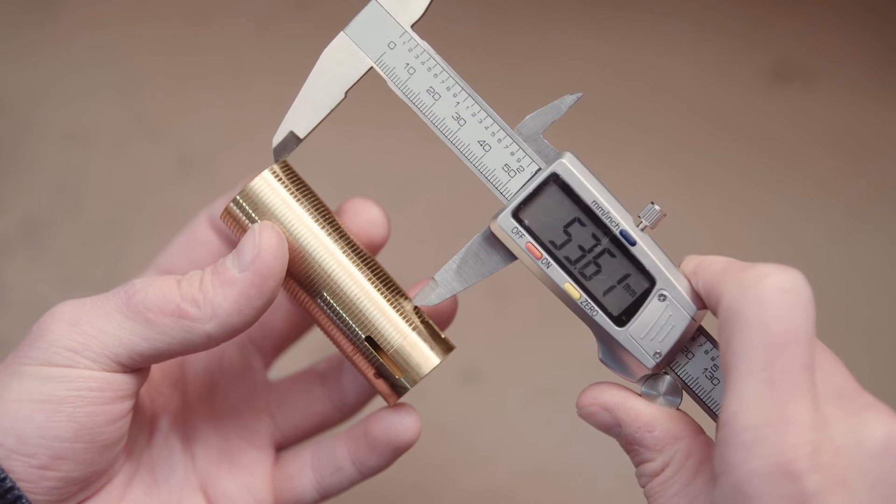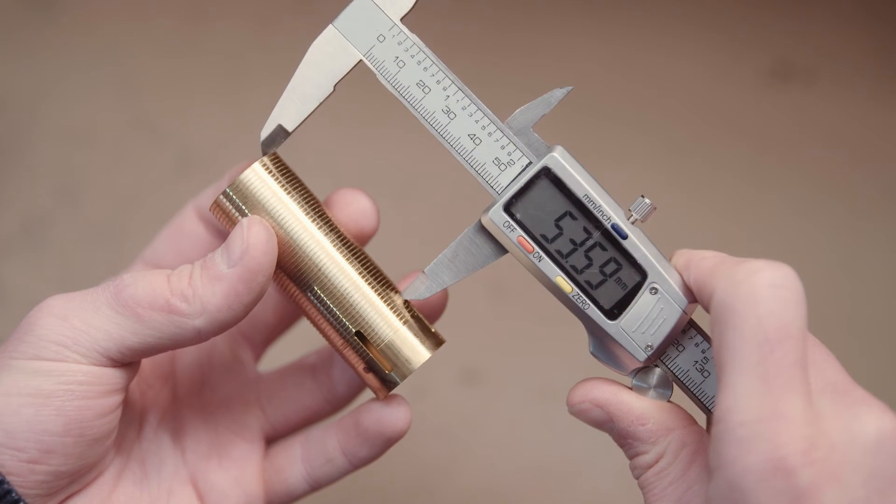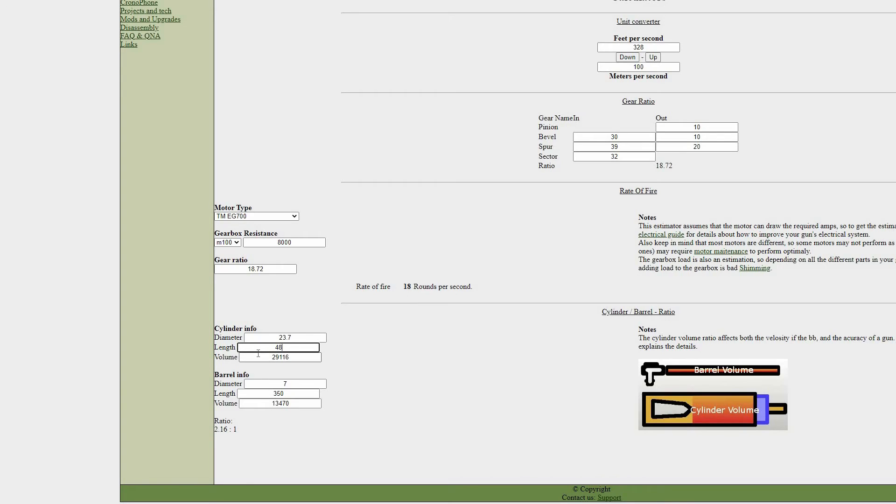I'm going to measure my 85% ported cylinder now and get the values from that. So I put them into the calculator, and it's come up with 1.6 to 1. So that is pretty close to that 1.7 or 1.8, so I've got the right cylinder for my barrel.